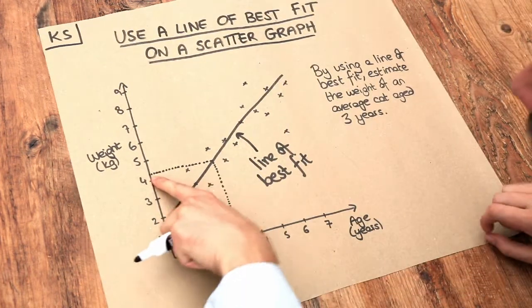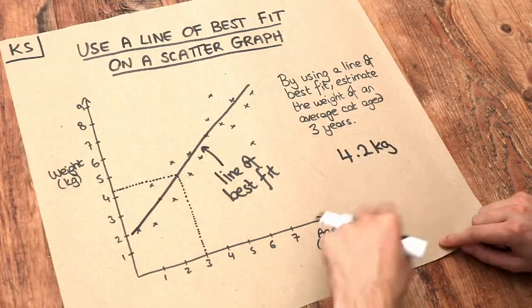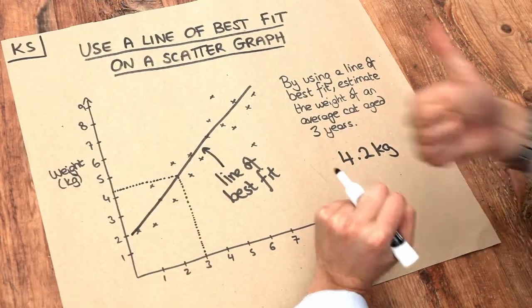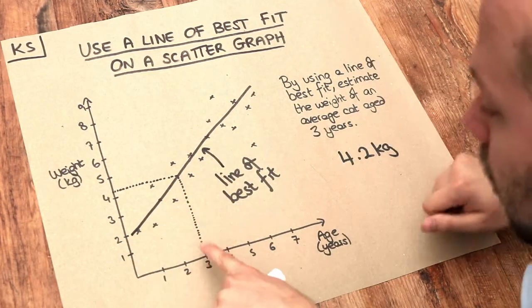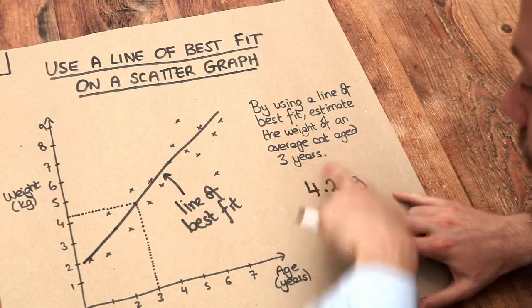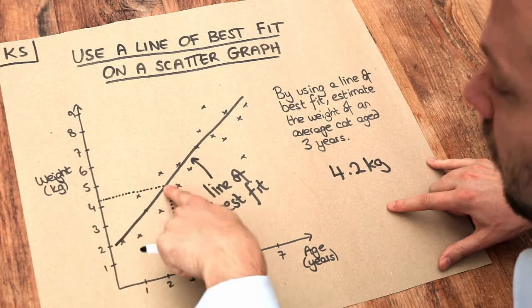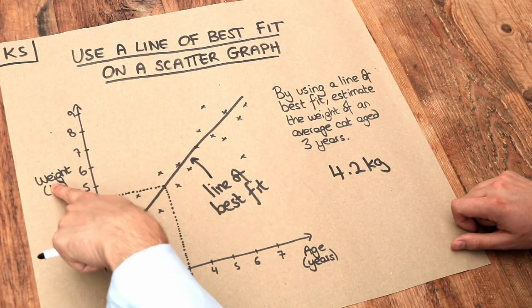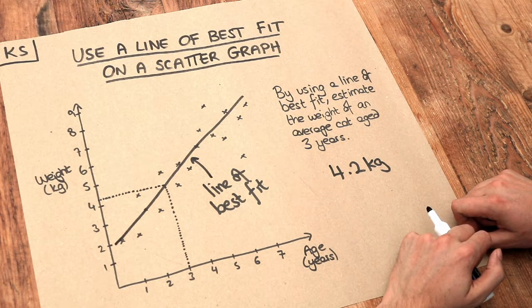So we're roughly about here, and I would estimate that's about 4.2 kilograms. And it's absolutely important in your exam that you firstly show your line of best fit that you've drawn, and secondly show the lines you're using—where you start from your value here, the three years, you go to the line of best fit, and then across, or across and down if, for example, I was to give you the weight of the cat and you had to estimate the age.